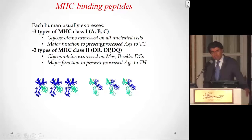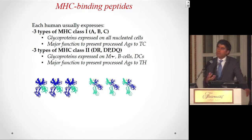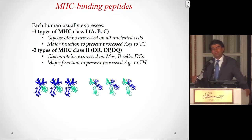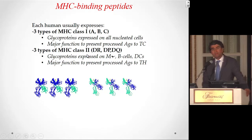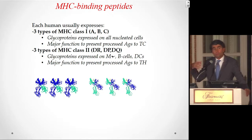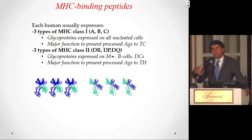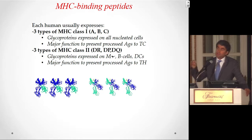Class 2 is only present on antigen-presenting cells — professional messengers that look for antigens to present to the immune system. They present their antigens to CD4 T cells, not CD8 T cells, because CD8 cells could kill them. CD4 T cells — called helper cells — when activated, secrete cytokines and chemokines to attract the immune system. CD8 T cells are cytotoxic T cells with the machinery to directly kill.